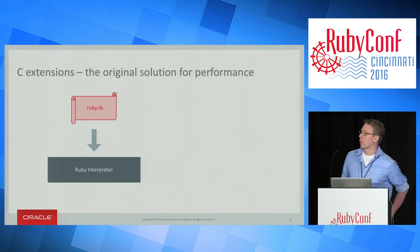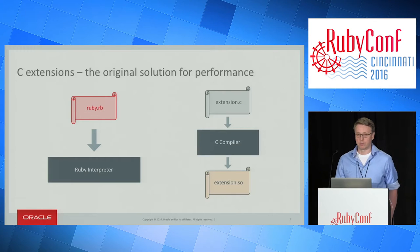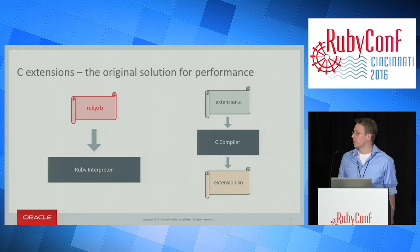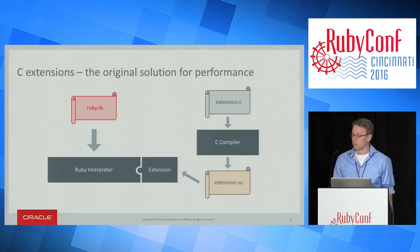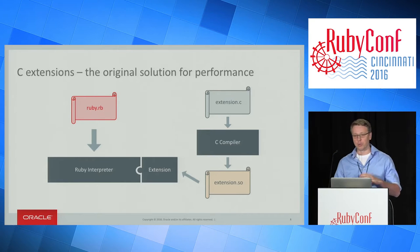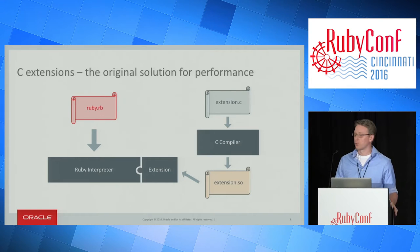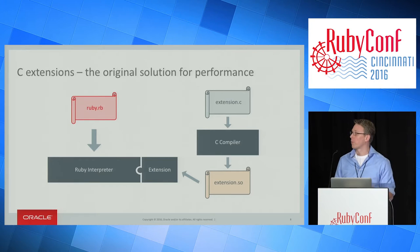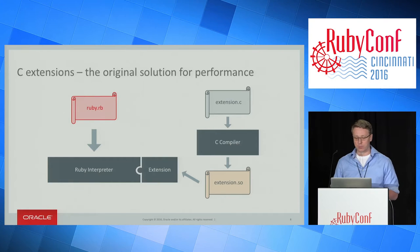The idea is that you have a Ruby program running on the Ruby interpreter and you can write an extension to the interpreter in C. You compile that with a C compiler and you get a binary library which you can plug into Ruby. This extends the Ruby interpreter and gives you new methods that appear as if they were written in the core library. You can use those from your Ruby program and they're about as fast as methods written in the core library, which historically has been pretty good performance.